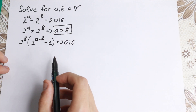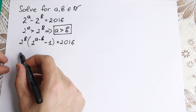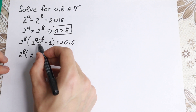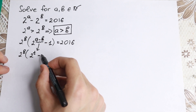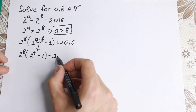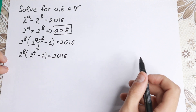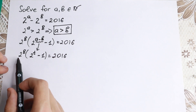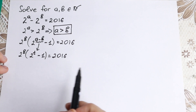We can substitute a minus b with a new variable. Let's write t for a minus b. So we have 2 to the power b times (2 to the power t minus 1) equal to 2016. Now let's write 2016 in a useful form.